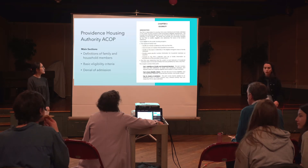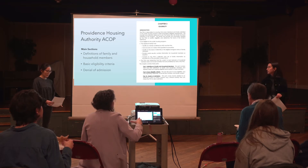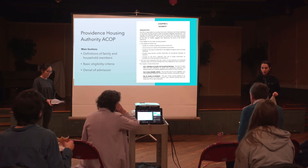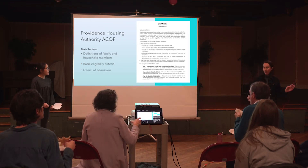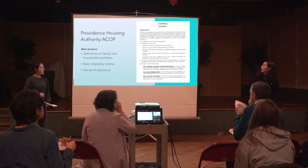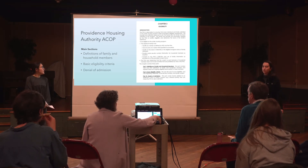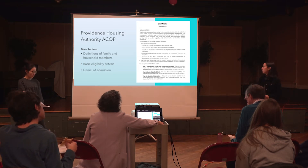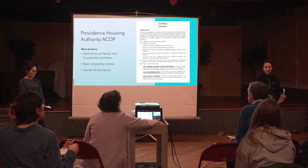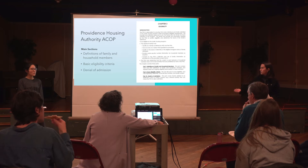All affordable housing providers are required to create a tenant selection plan, or TSP, and they must make that plan public upon request — which we'll talk about later, because they weren't always public when we tried to get them. We wanted to include an image of a typical TSP so you could get an idea of what's in them. They have things like eligibility criteria, information about how tenants would get denied, how they would get put on the wait list, evicted, and different things like that. This one is from Providence Housing Authority.